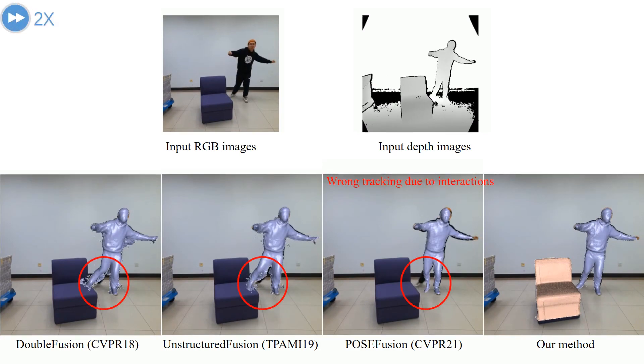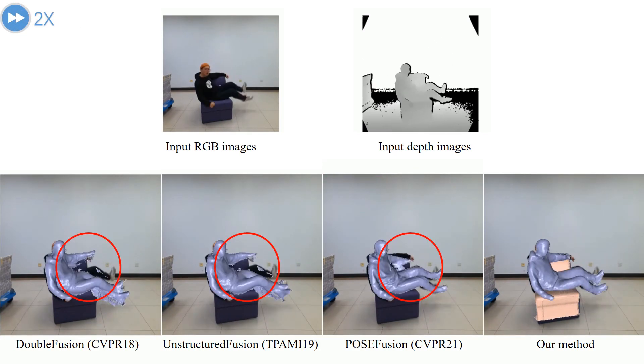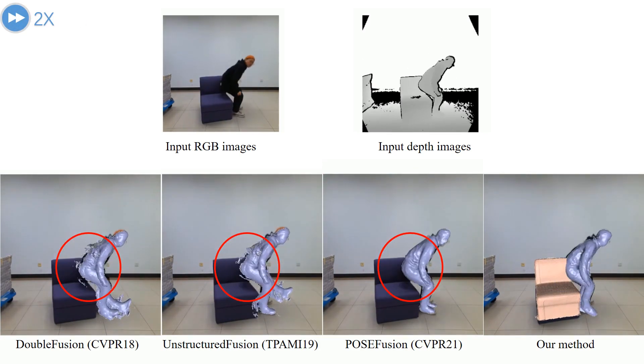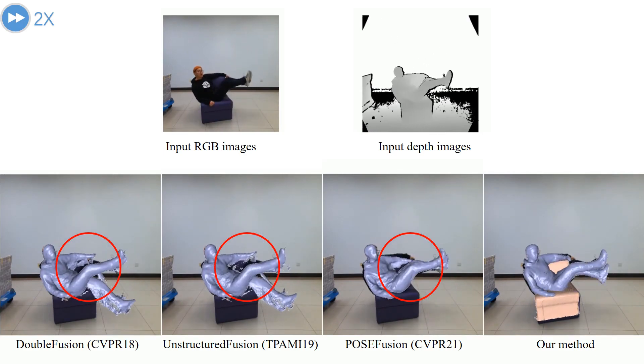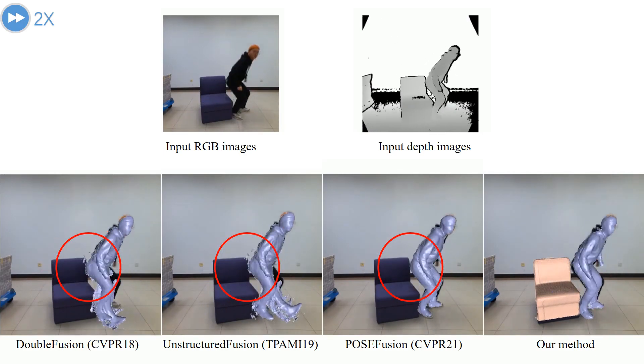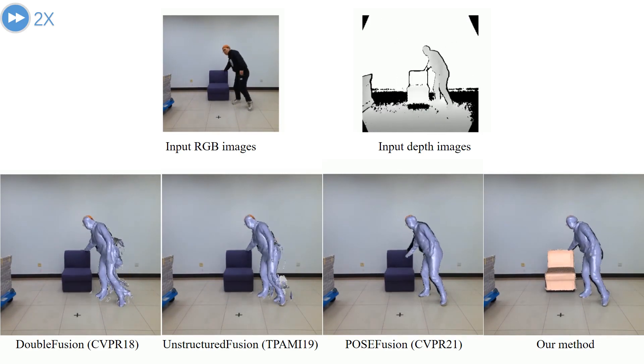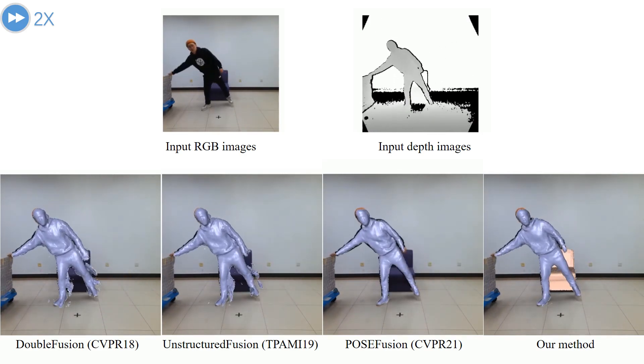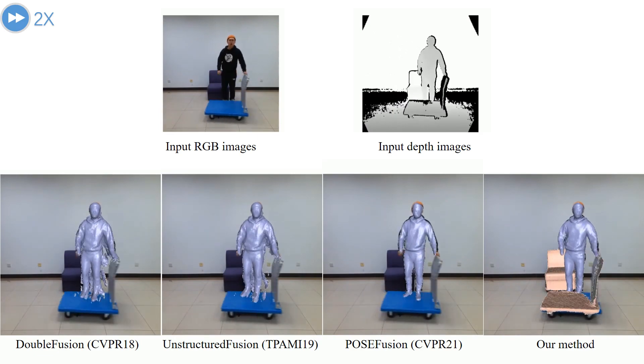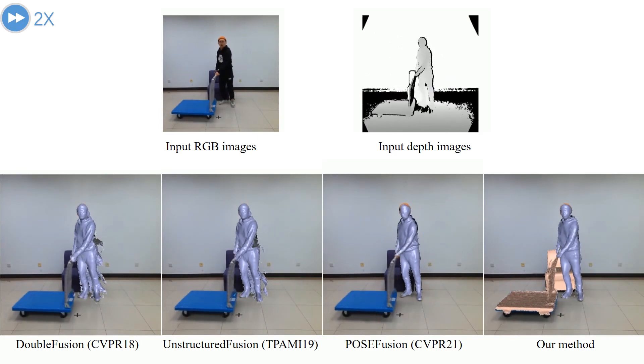Our method can faithfully reconstruct both the humans and objects in the interaction scenarios, while others suffer from the fast human motions and the severe occlusion, as highlighted in the red circle.